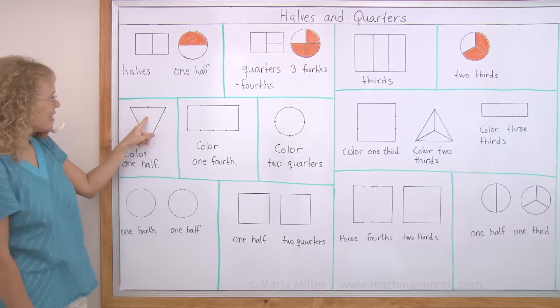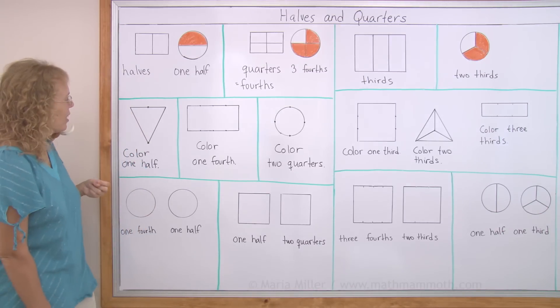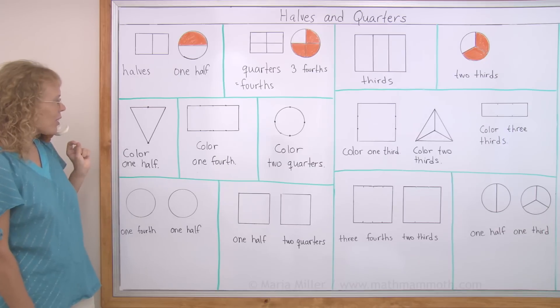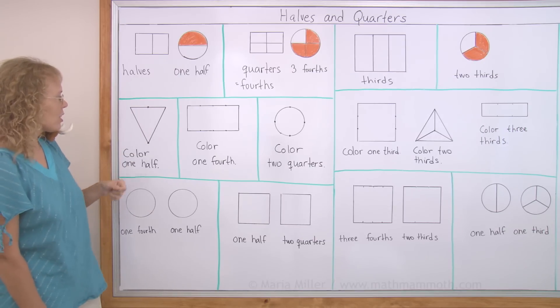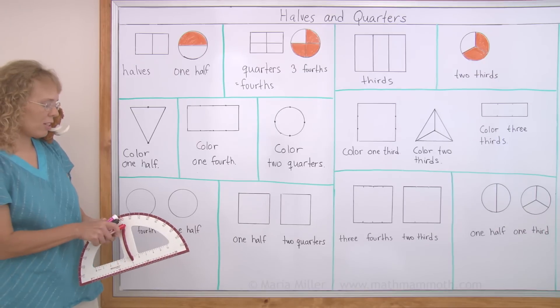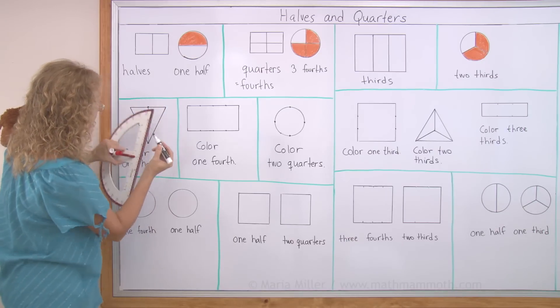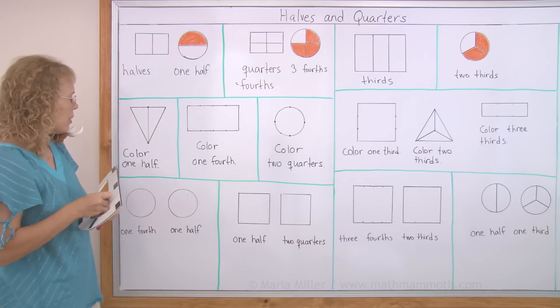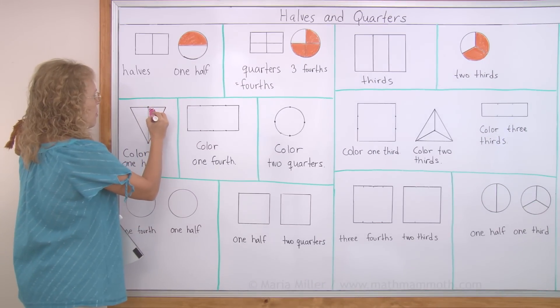Now over here, it's a triangle, and our task is to color one half of it. And for that, I need to first divide it into two equal parts. And the dots are going to help me. I'm just going to draw a line. There. And now I can color it. Maybe color this half.